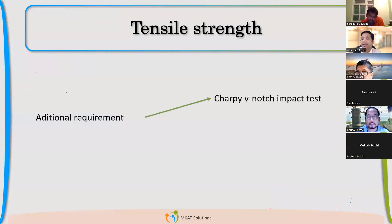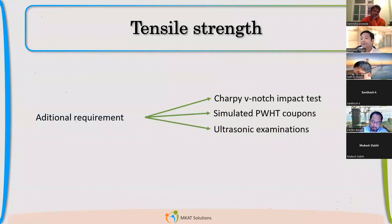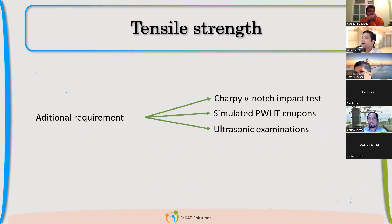Moving forward. In the SA516 specification, you will also see some additional requirements. If you want a Charpy V-notch impact test, you will have to additionally specify that requirement, and then the mill manufacturer will perform the Charpy V-notch impact testing and attach the report. If you need a simulated post weld heat treatment coupon, that is also an additional requirement you can specify.